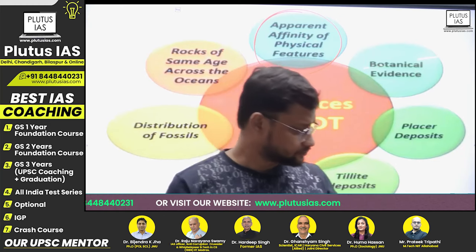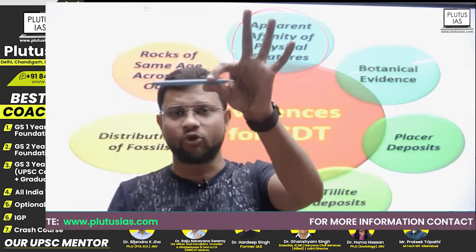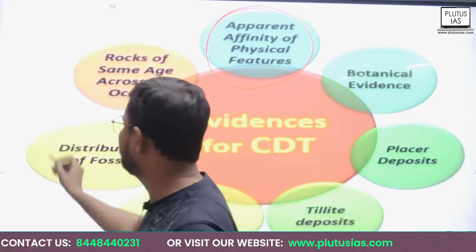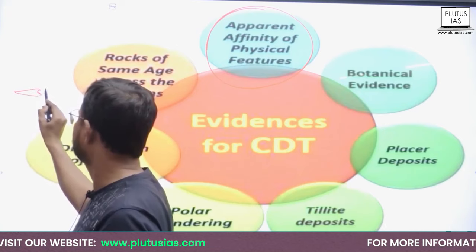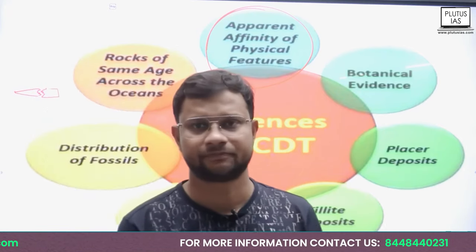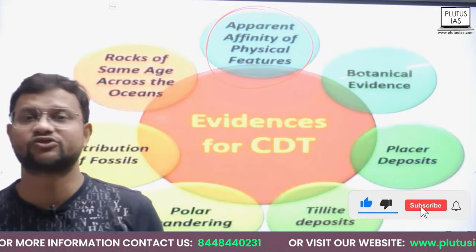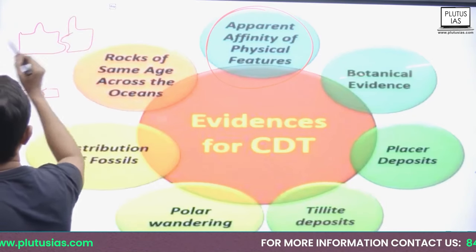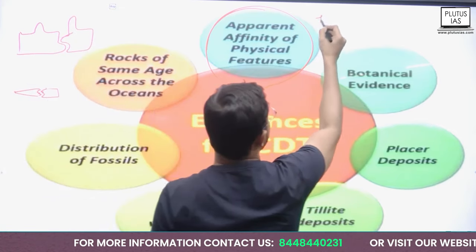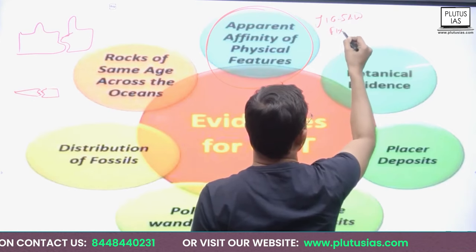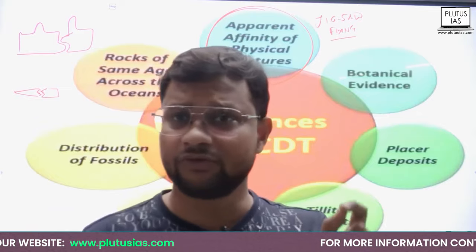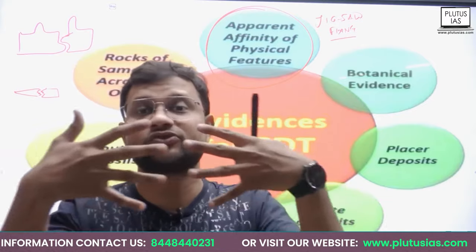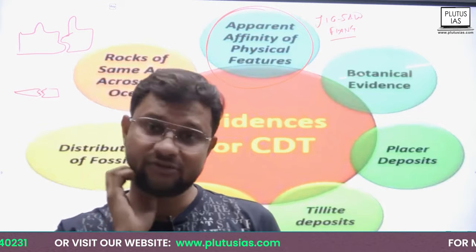Now it's a simple thing. If something breaks — for example, if a plate breaks — the broken parts will fit within each other. In school days there was also a puzzle game, jigsaw fitting. If you remember, pieces fit into each other and the image becomes complete. Similarly, these continental masses were united and then they started to separate, having a jigsaw fit within them. This is one of the key evidences, because these theories were evidence-based.